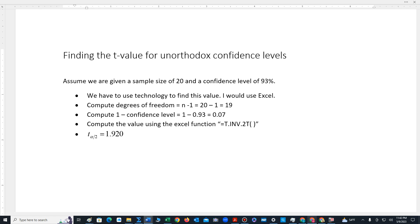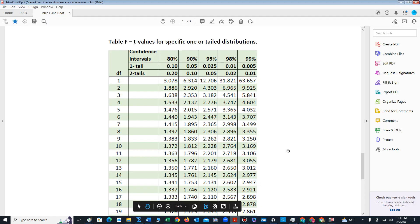So if we turn to Table F, we notice 93 percent is not listed. So we cannot use this table.